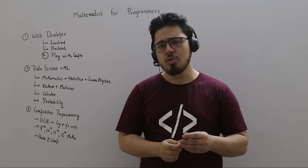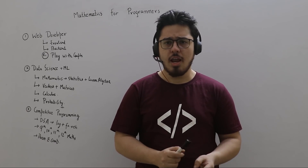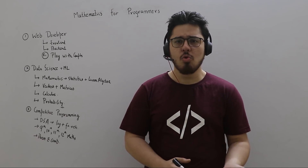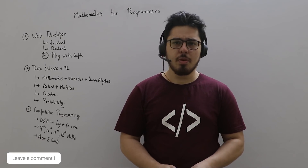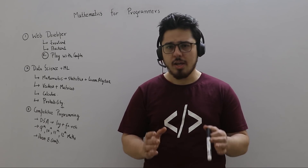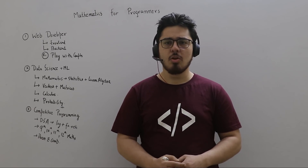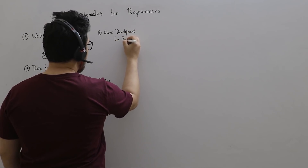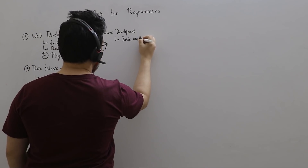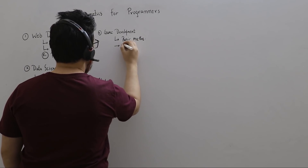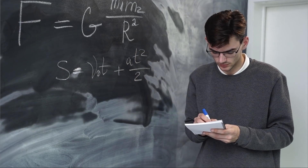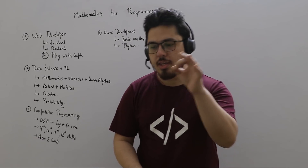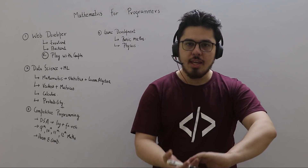If you want to check out mathematics for programming — and I'm not sure how relevant all of it is — please tell me in the comments. If you move to game development, you will need basic maths and physics. Physics is especially important when you are dealing with trajectory and parabolic motion.